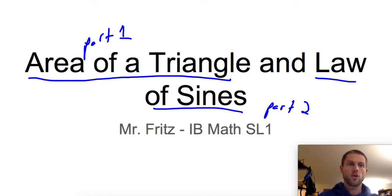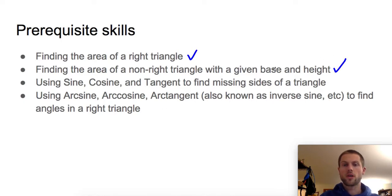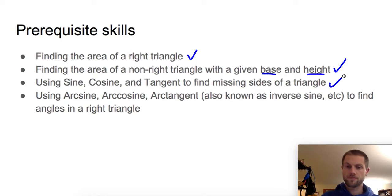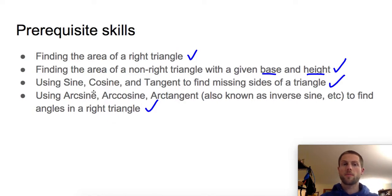We're going to start off with the area of a triangle, and you should already know some of these things. You should know how to find the area of a right triangle, how to find the area of a non-right triangle if you're given the base and the height. You should also be able to use sine, cosine, tangent — these trig functions — to find missing sides or angles, and you should be able to use inverse trig functions as well. If there's any question about any of this, pause the video, go look it up, and come on back.